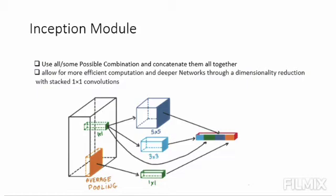And finally, we will concatenate them all together. We are using 1x1 convolution first, then we connect them with 5x5 and 3x3 with average pooling.